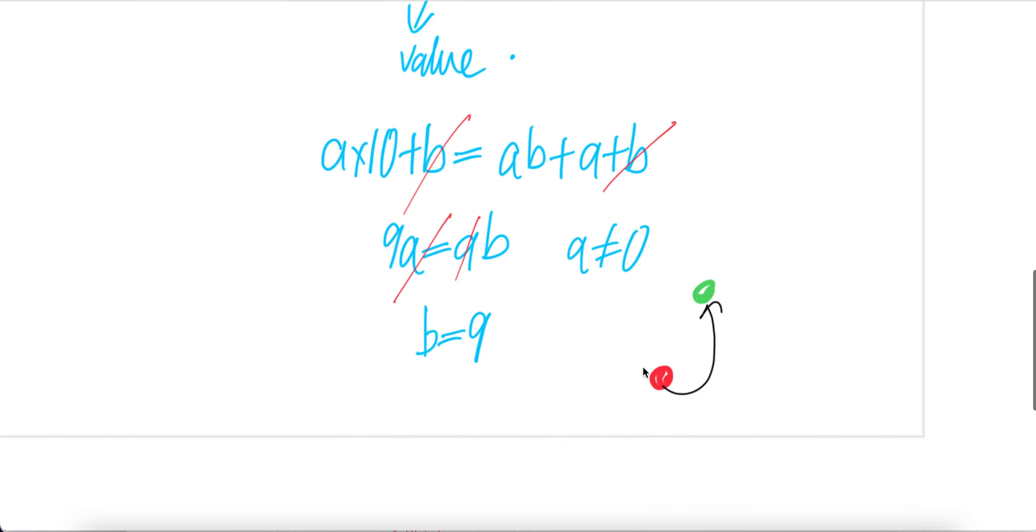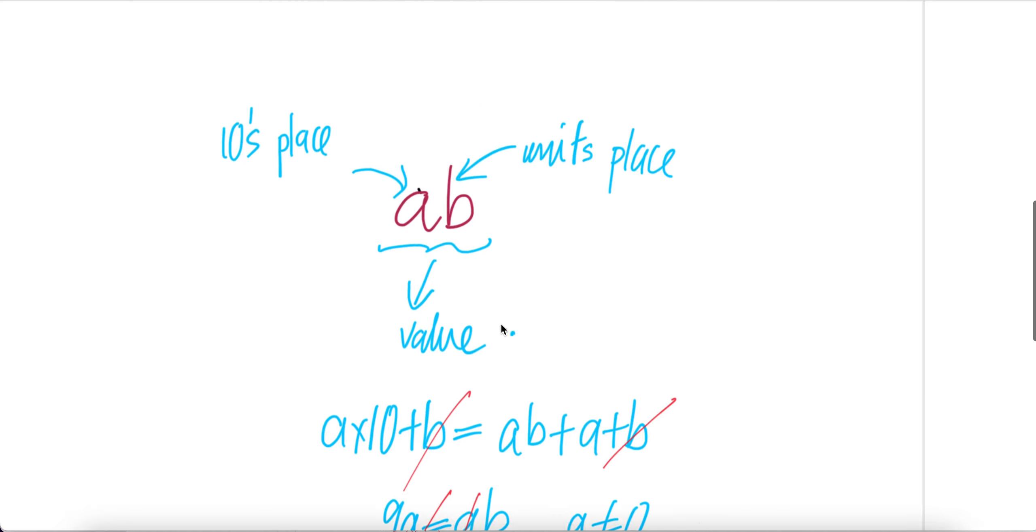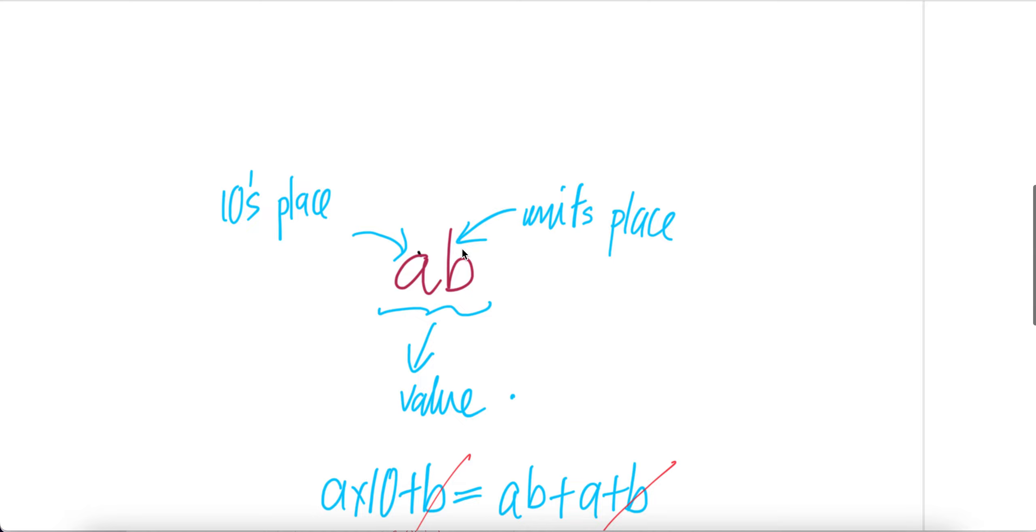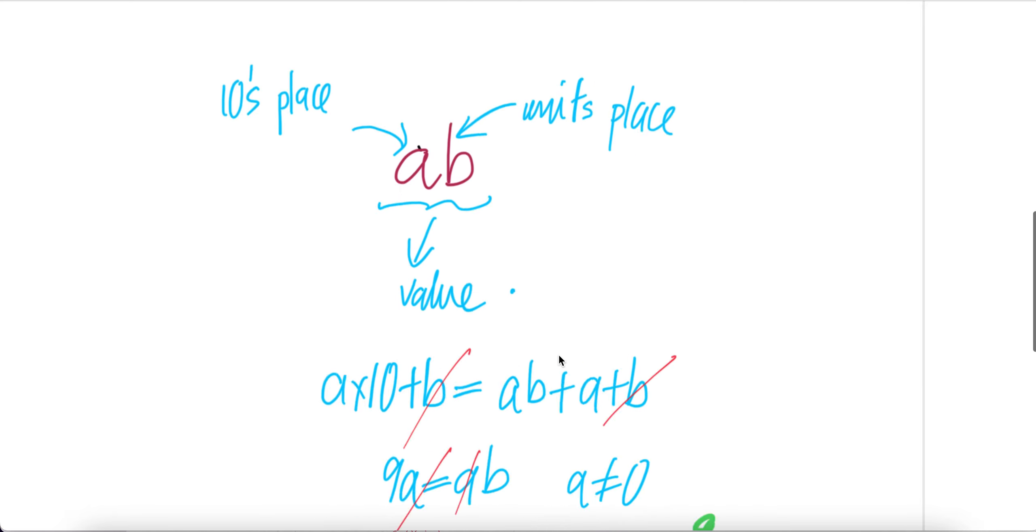A and A cancel because A is not 0, therefore B equals 9. Therefore the unit place B here is equal to 9.